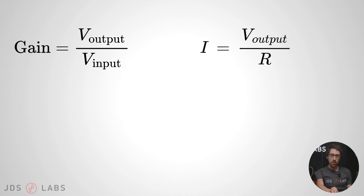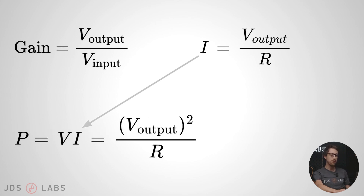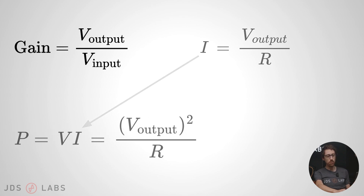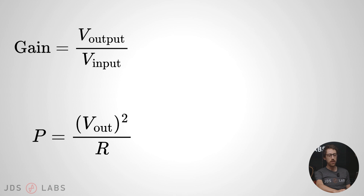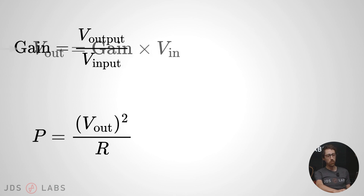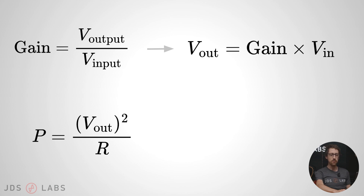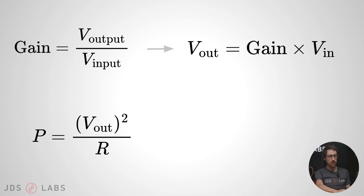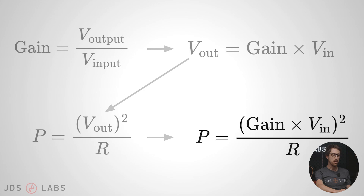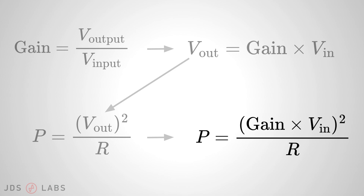Ohm's Law tells us that current moving through the headphones is voltage divided by resistance, and then power is volts times current. You can substitute Ohm's Law into that equation to arrive at V squared divided by R. Then we can rearrange the gain equation to know that V out equals gain times V in, and plug that back into the power equation. Power is a function of gain and input voltage going into the amp — not just a function, but it's a squared function.